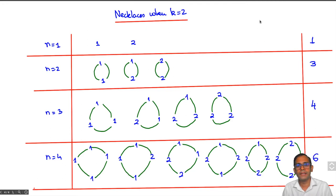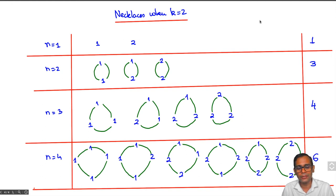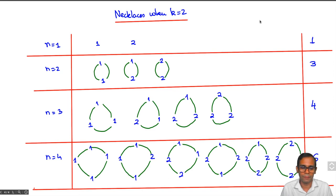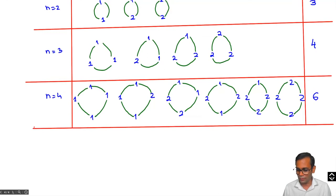How many conjugacy classes are there? A necklace is a conjugacy class of words. In this table, I've taken a two-letter alphabet and drawn all the necklaces of length n for small values of n. You can imagine these as necklaces with beads of two colors. There are two necklaces of length 1, three necklaces of length 2 — since the words 1,2 and 2,1 give the same necklace. For n equals 3 there are four necklaces, and for n equals 4 there are six necklaces.